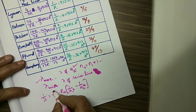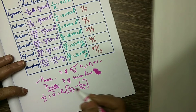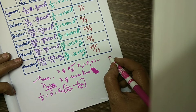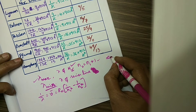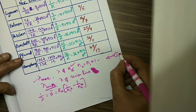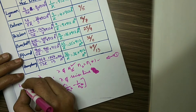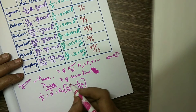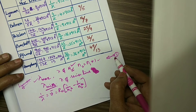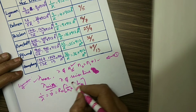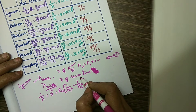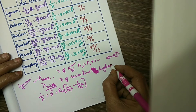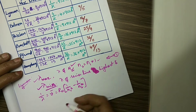Now, what is lambda minimum? Lambda minimum is the series limit wavelength. Series limit means the electron is coming from infinity to the first orbit — in the Lyman series. That wavelength is called the series limit line and it has the highest energy; therefore, minimum wavelength.